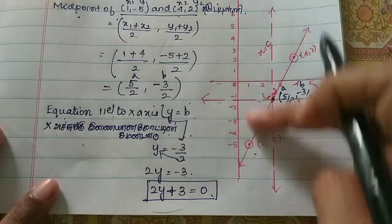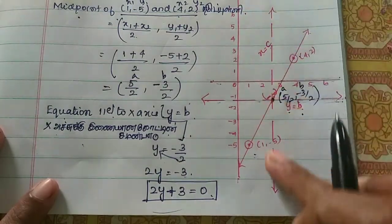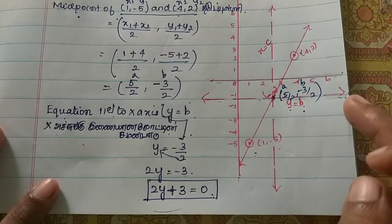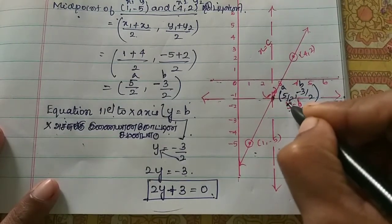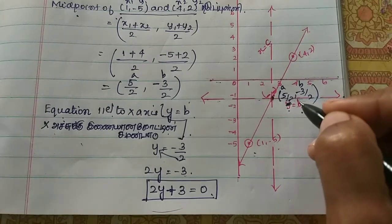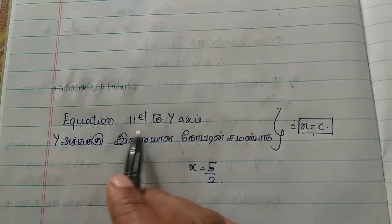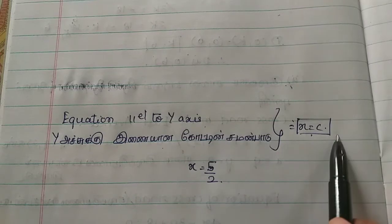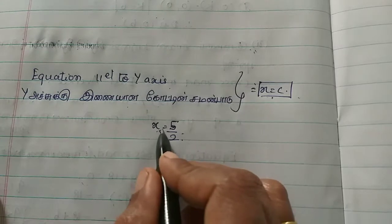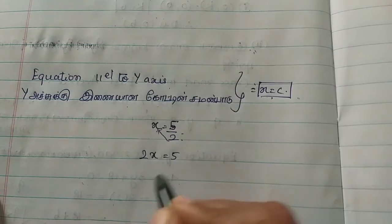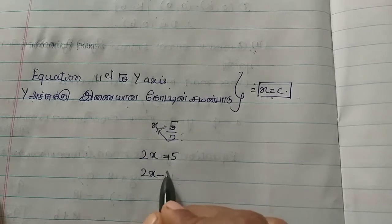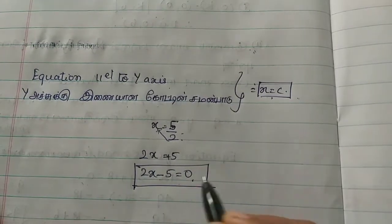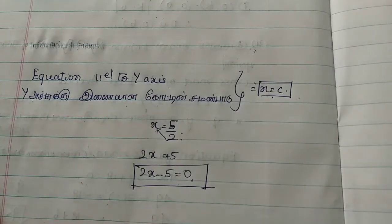The line parallel to the y-axis uses x equal to c. So c is equal to the x-coordinate, which is 5 by 2. That gives x equal to 5 by 2. Multiplying: 2x equals 5, so 2x minus 5 is equal to 0. This is the equation of the line parallel to the y-axis.